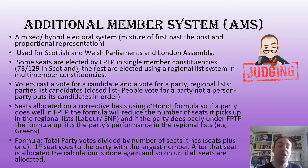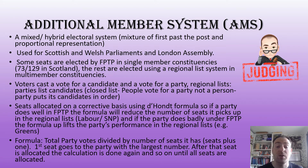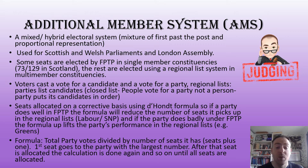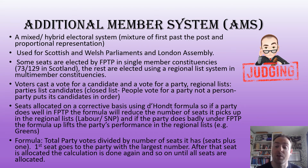A different voting system is the Additional Member System, or AMS. This is a mixed or hybrid system — a mixture of first past the post and proportional representation. It is used in the Scottish and Welsh parliaments and in the London Assembly. Some seats are constituency-based and elected on first past the post in single member constituencies — 73 of the 129 seats in Scotland are done this way. The rest are elected using a regional list system in multi-member constituencies. Voters cast a vote for a candidate in their constituency and also vote for a party on the regional list. Each party has a closed list, meaning people vote for the party, not an individual person.